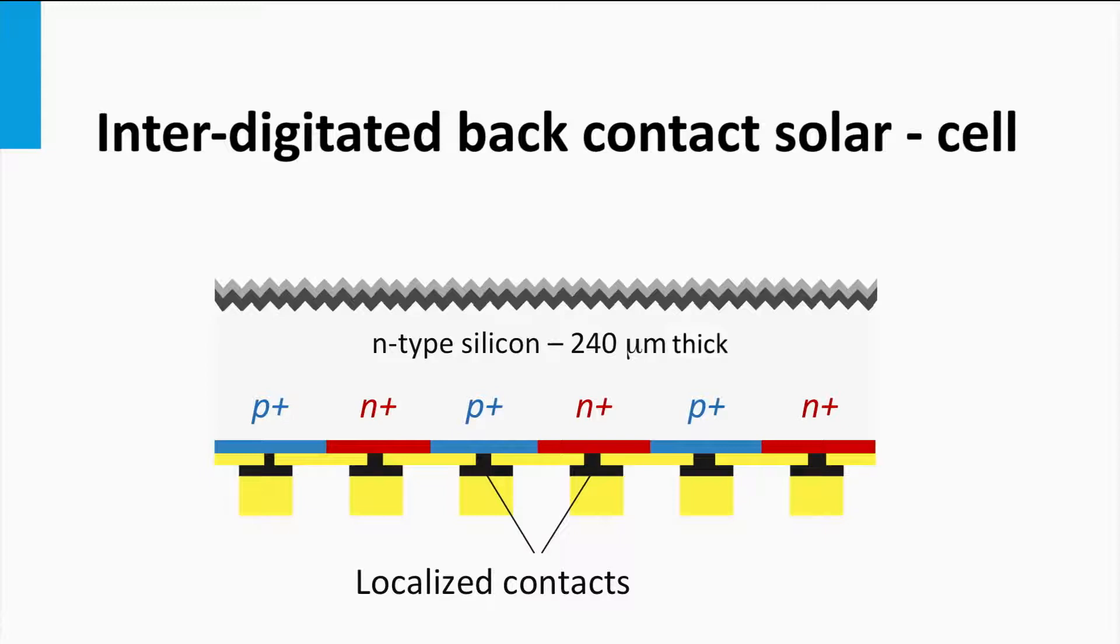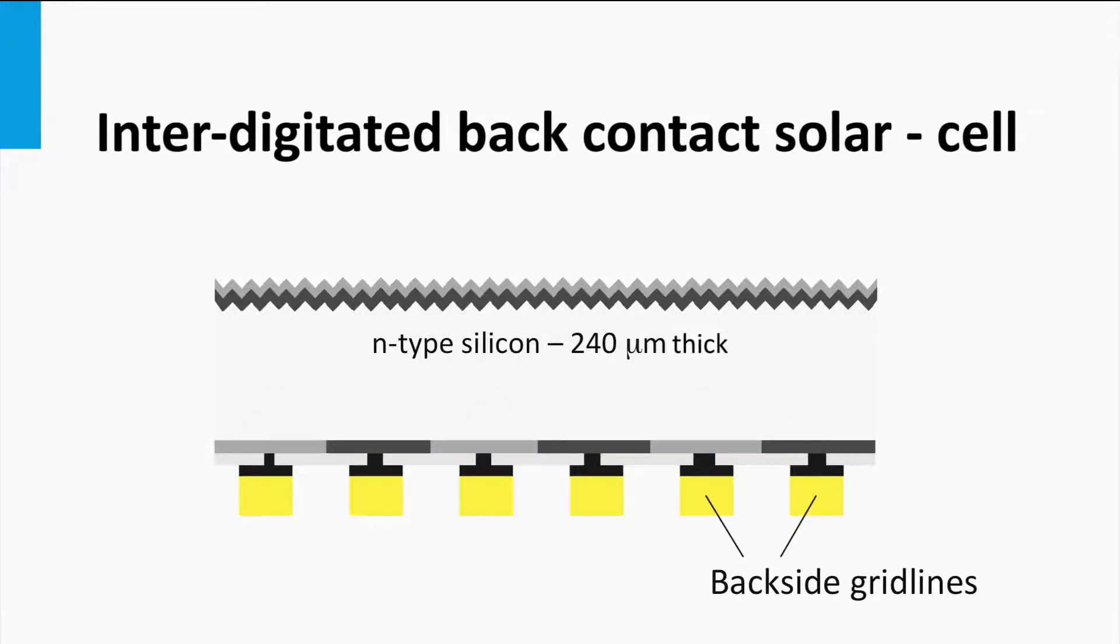The holes are separated at a junction of P-plus and the N-type silicon, whereas the electrons are collected using an N-plus type silicon. The semiconductor metal interface is kept as small as possible to reduce the unwelcome recombination at its defect-rich interface.